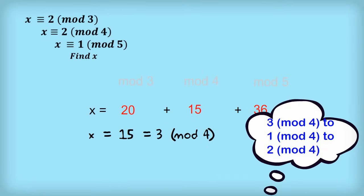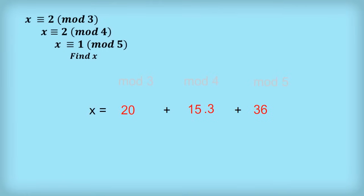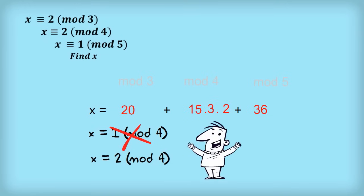15 is 3 mod 4, and if we multiply 3 by 3, we get 9, which is the same as 1 in mod 4. So let's multiply the 15 by 3. Now, if I apply mod 4 to x, I get 1, but I want 2. To fix this, we multiply the middle section by 2. Now x mod 4 will equal 2, and we're done.